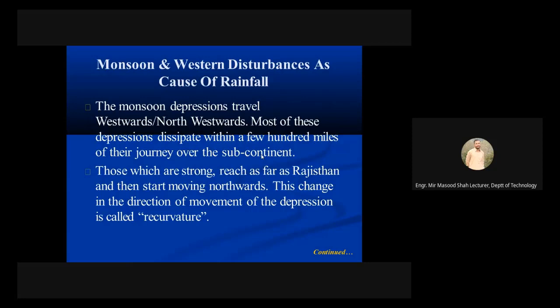Those which are strong reach as far as Rajasthan and then start moving northwards. This change in the direction of movement of the depression is called a recurvature.